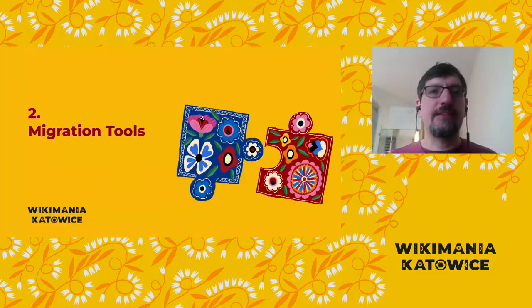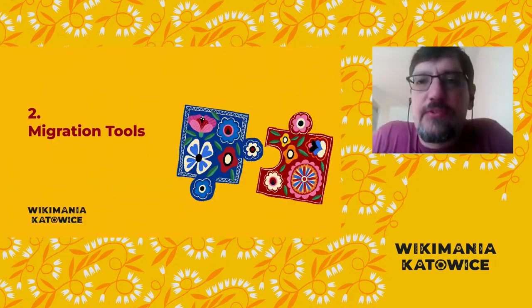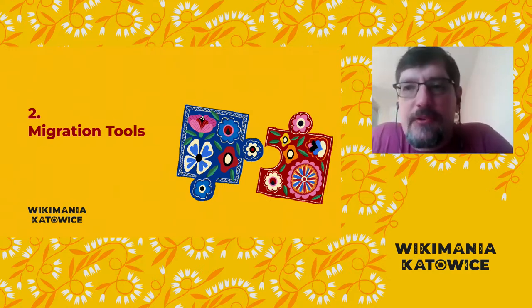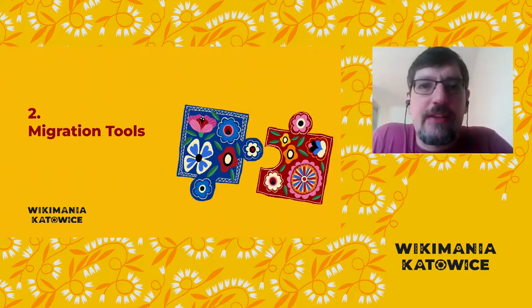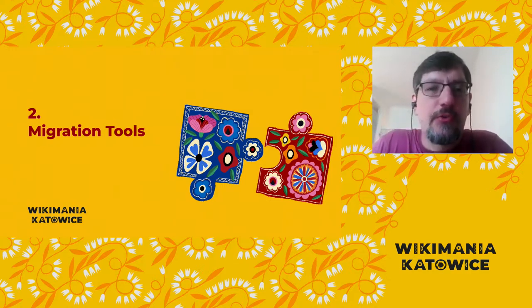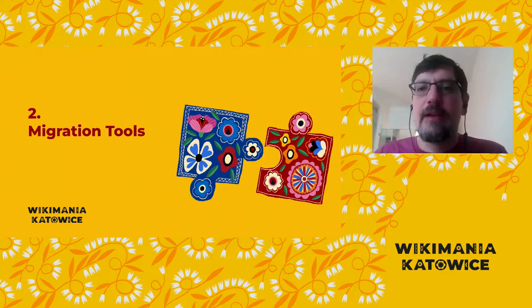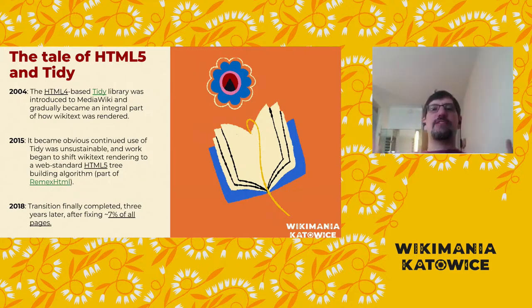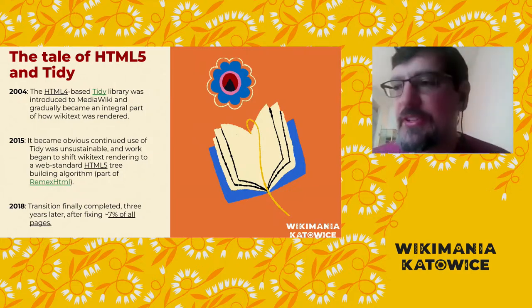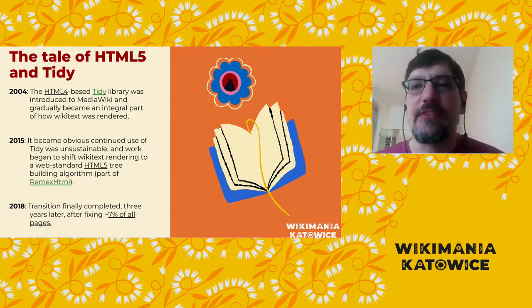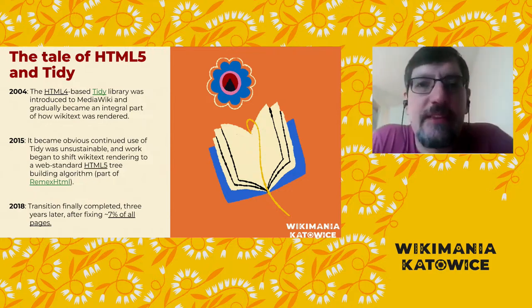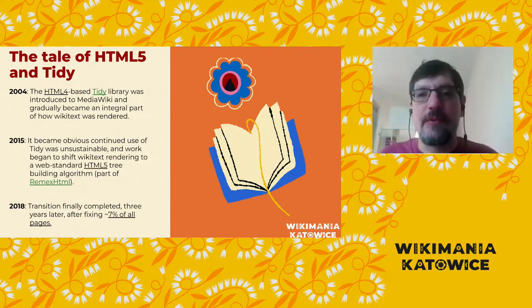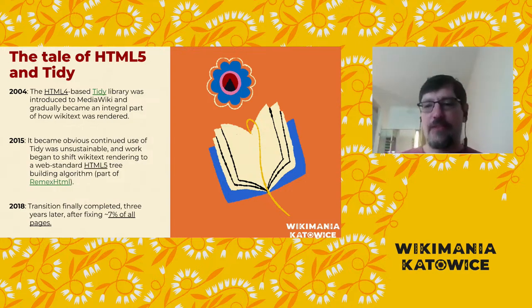That leads us into the next section: migration tools. Some pages do look different on Parsoid than they did in the legacy parser, often because they use old or deprecated features of Wikitext. How do we find them, and what do we do about them? Let me tell you an ancient tale — a tale so old browsers were still using HTML4, and no two browsers displayed HTML in exactly the same way, especially if there was broken HTML on the page.